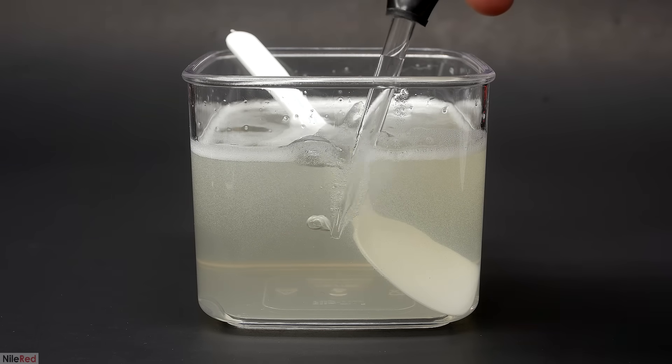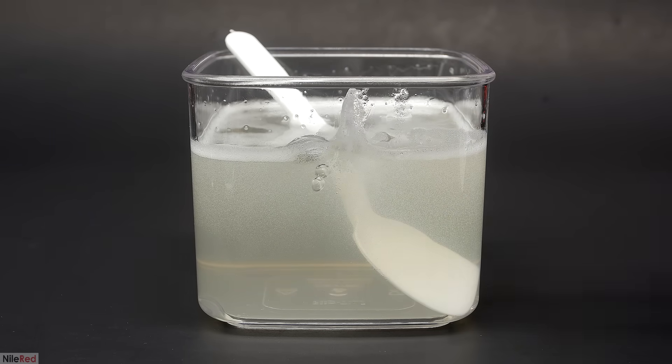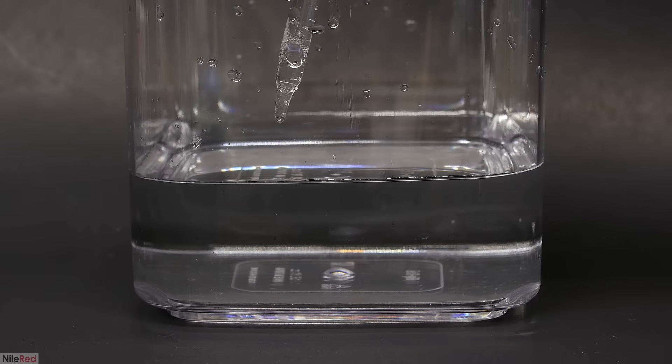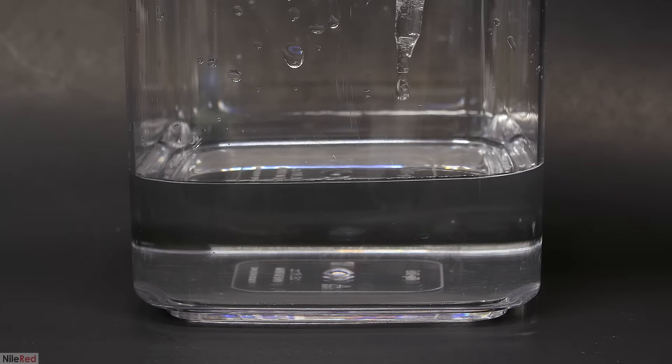I pulled out a small amount using an eyedropper, and then I slowly added it to the calcium chloride solution. It might be hard to see, but it's actually separating out as these little jelly balls. It's very important that it's added dropwise, because if it's all poured in at once, it would just become one solid chunk.